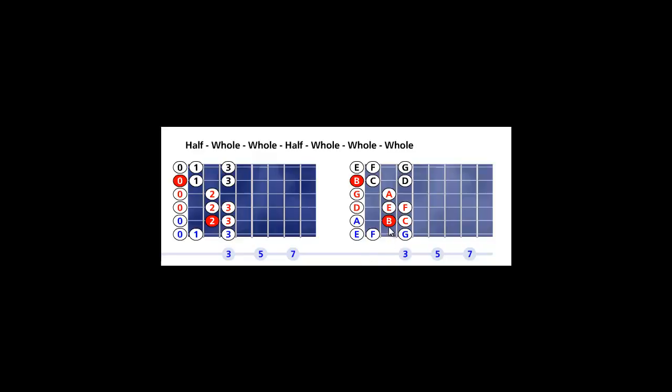Look at the right fretboard. The root or tonic note, the B, on fifth string second fret. You walk up the steps according to the Locrian Mode 7 formula.